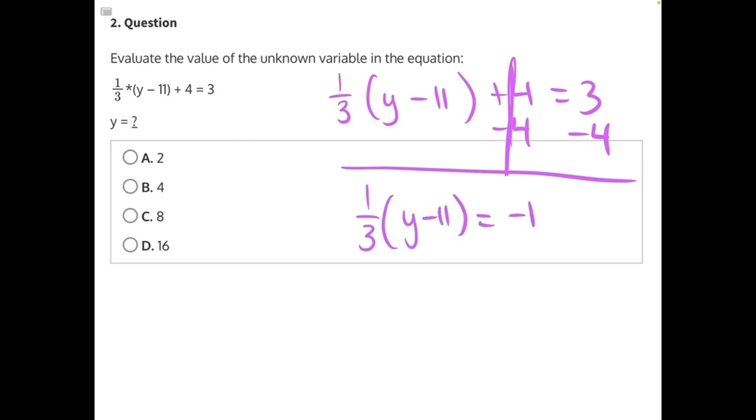Now we can look at this 1/3. 1/3 is being multiplied to the set of parentheses, so the opposite operation would be division. We can divide both sides by 1/3. These 1/3s will cancel, leaving us with (y minus 11) equals negative 1 divided by 1/3.